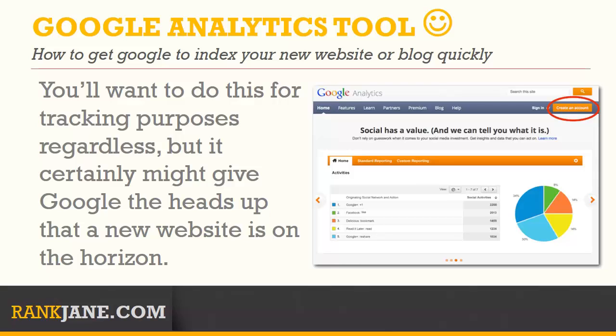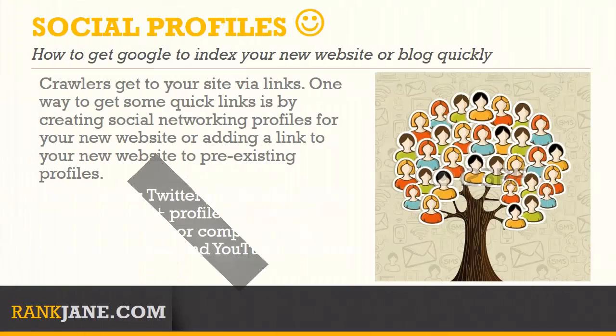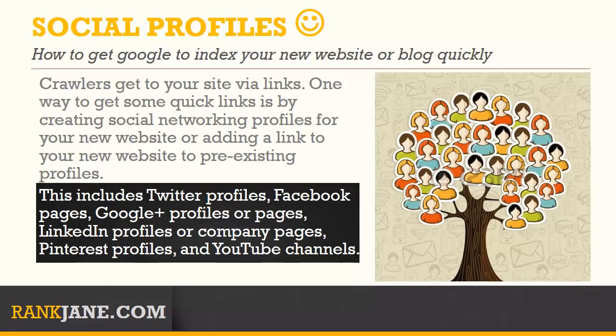Submit website URL to search engines. Some people suggest that you don't do this simply because there are many other ways to get a search engine's crawler to your website, but it only takes a moment, and it certainly doesn't hurt things. So submit your website URL to Google by signing into your Google account and going to the Submit URL option in Webmaster Tools. For extra credit, submit your site to Bing. You can use the anonymous tool to submit URLs below the Webmaster Tools sign-in. This will also submit it to Yahoo.